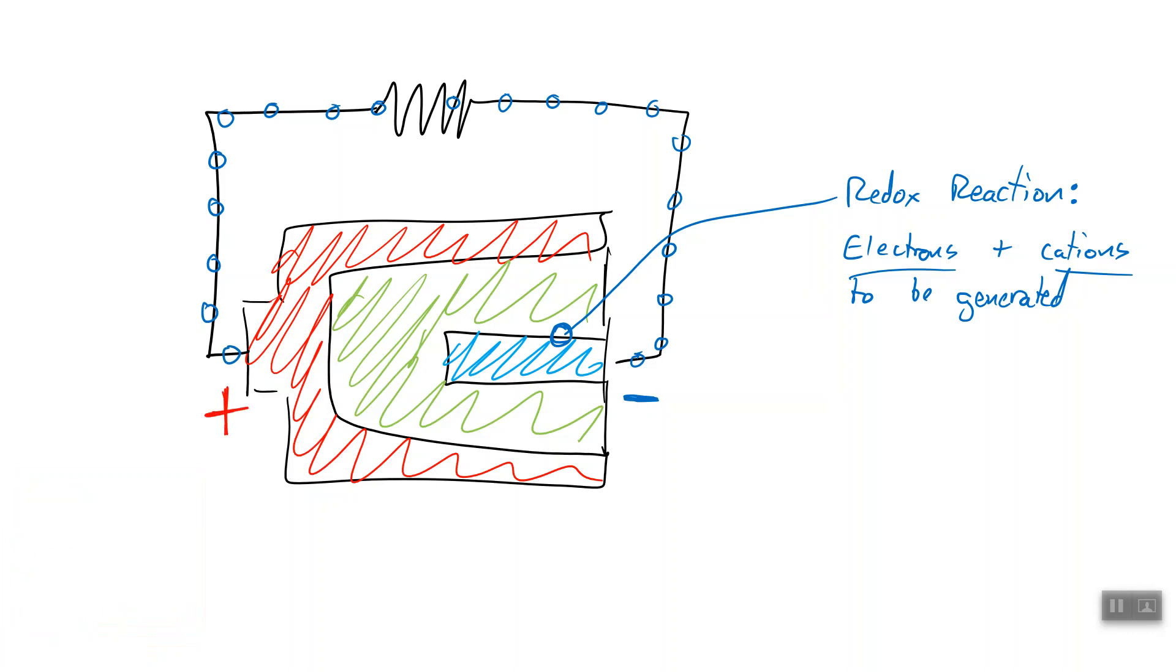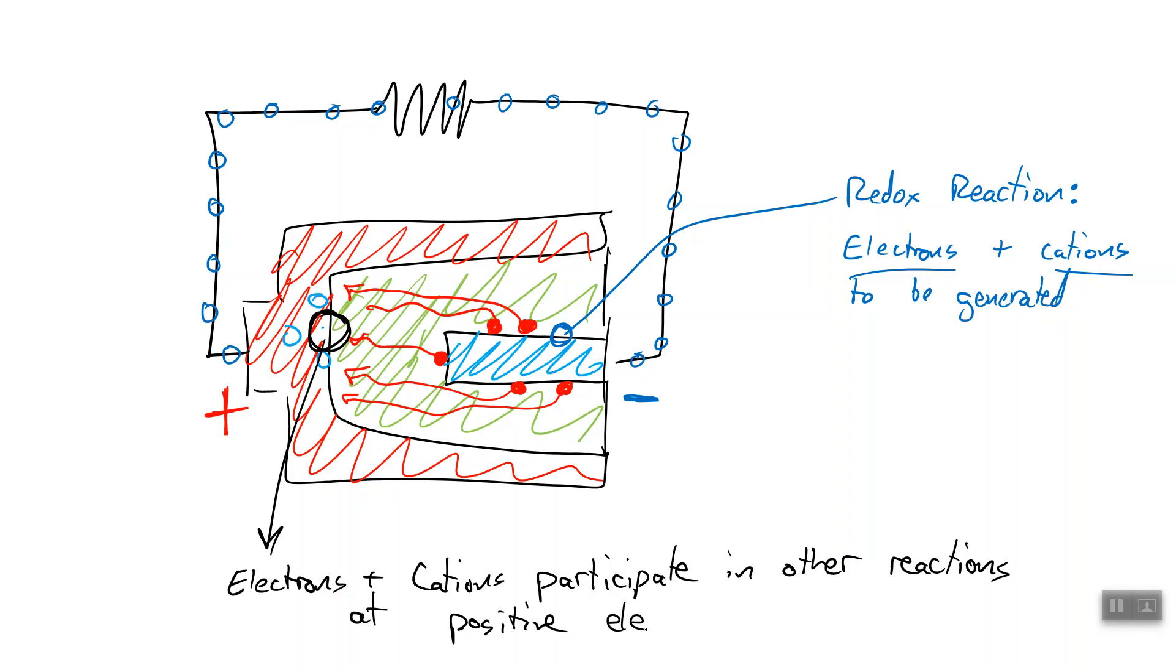This resistor will consume some of the power carried by those electrons, and they then arrive at the positive electrode. Here on a battery, this is the positive end, and here is our negative end. Now, when we generated these electrons, we also generated some ions. And now this is where the electrolyte comes in. The electrolyte allows those ions to flow through it, migrating towards the positive end, where they are reunited with the electrons. And then we have a separate reaction here.